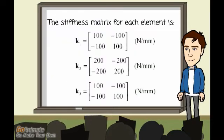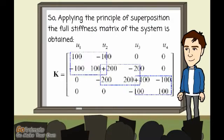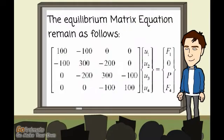The stiffness matrix for each element is... So, applying the principle of superposition, the full stiffness matrix of the system is obtained. The equilibrium matrix equation remain as follows.